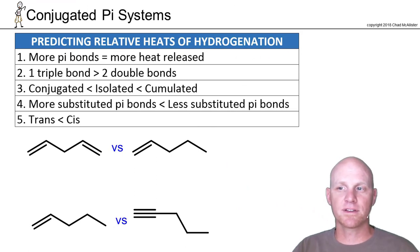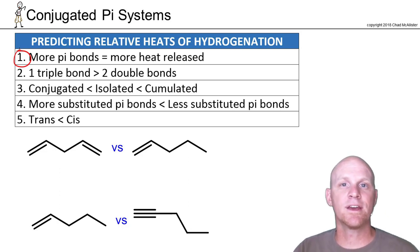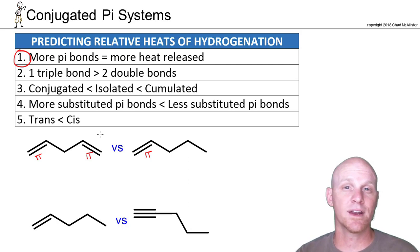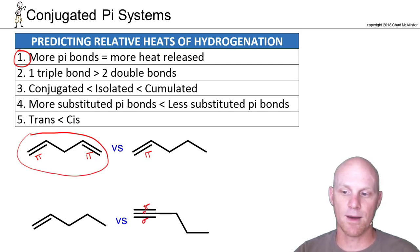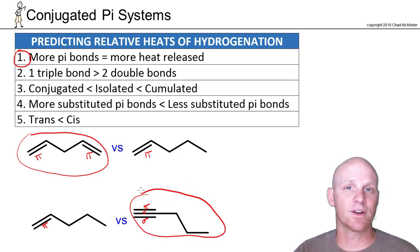Heats of hydrogenation have come up before with both alkenes and alkynes. The first thing to know when predicting relative heats of hydrogenation: the more pi bonds you're reducing — that you're hydrogenating — the more heat you're going to release, the more exothermic. So if I compare a compound with two pi bonds versus one with one pi bond, the one reducing more pi bonds releases more heat. With a triple bond you've got two pi bonds, whereas an alkene has only one. So with more pi bonds, you're going to release more energy during hydrogenation. That's the first rule: more pi bonds, more heat released.